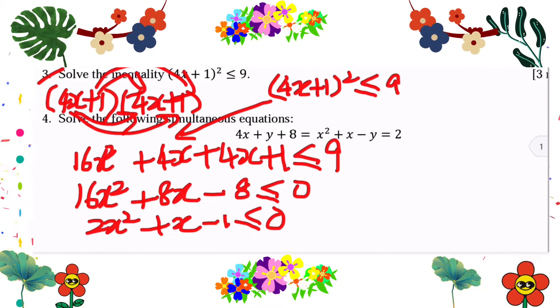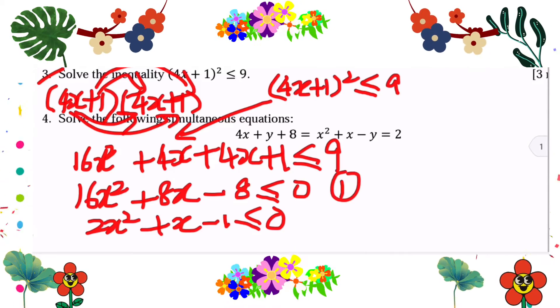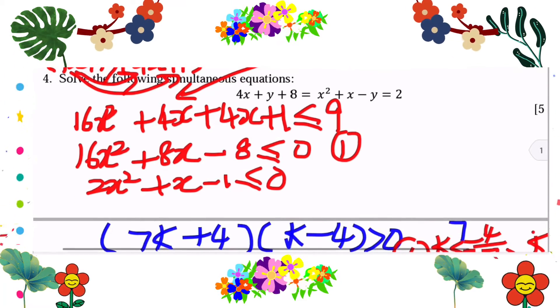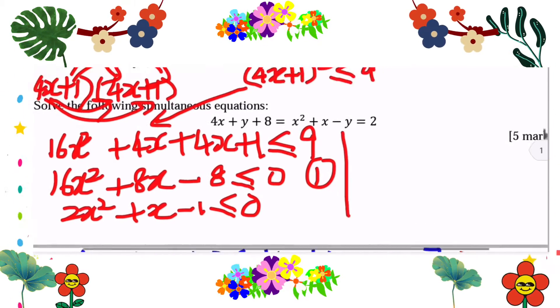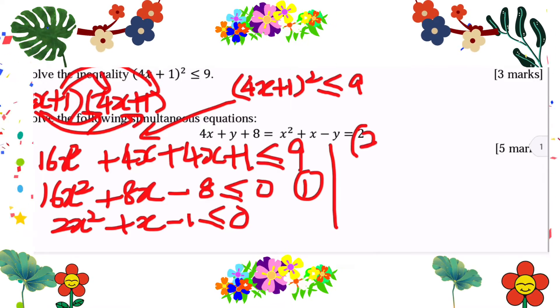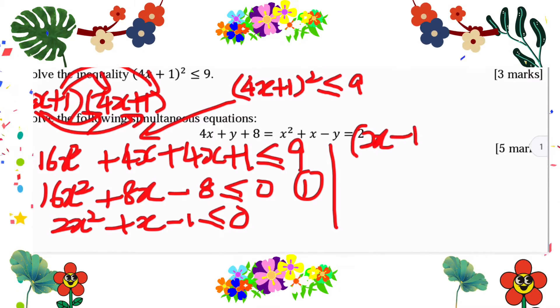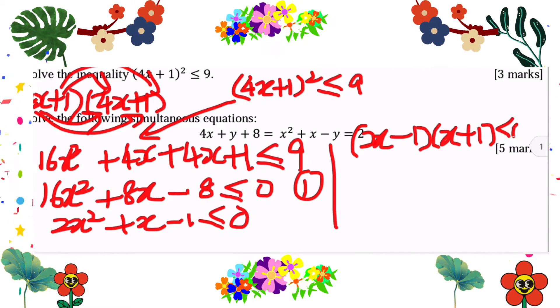So we have the factor 2x. Let's write down the marks. If you write your quadratic function in general form, simplest form, and then you factorize, it will be (2x - 1)(x + 1) ≤ 0.